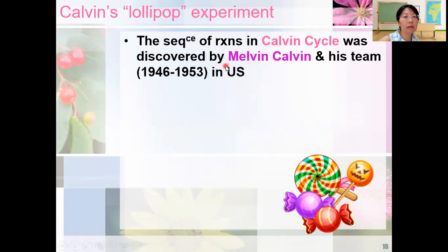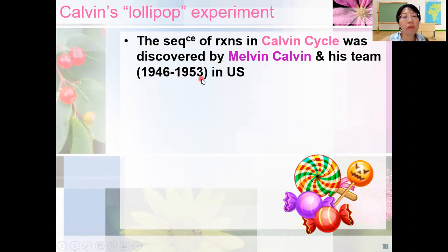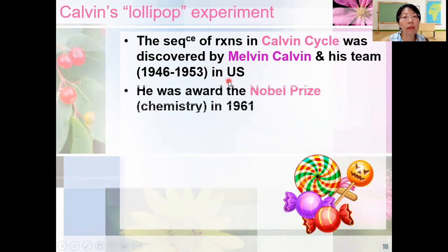In Calvin's lollipop experiment, the sequence of reactions in Calvin's cycle was discovered by Melvin Calvin and his team from 1946 to 1953 in the US. He was awarded the Nobel Prize for Chemistry in 1961 for discovering this Calvin cycle.